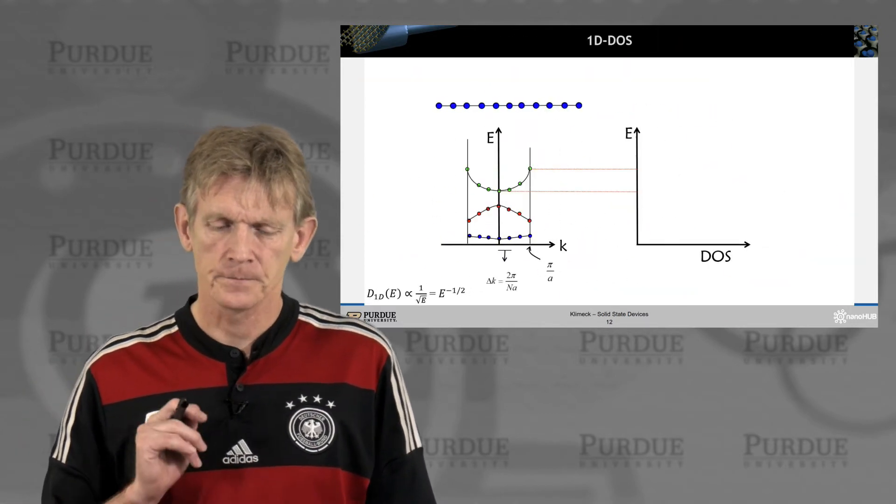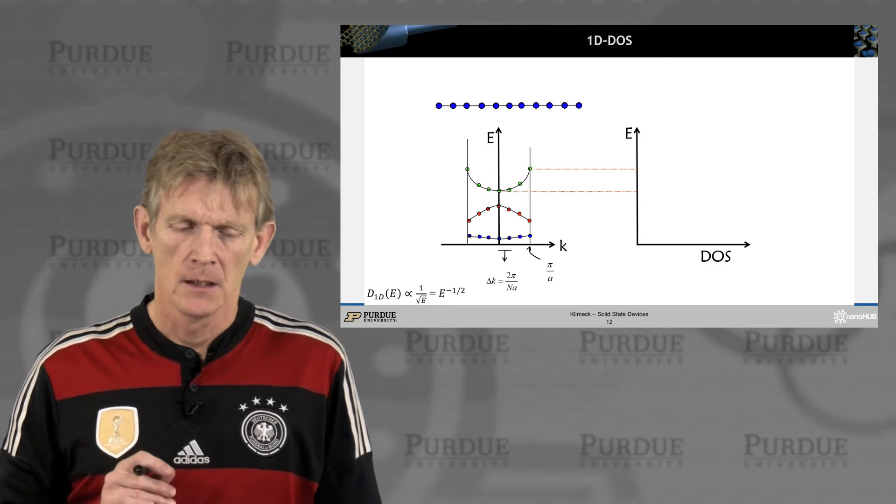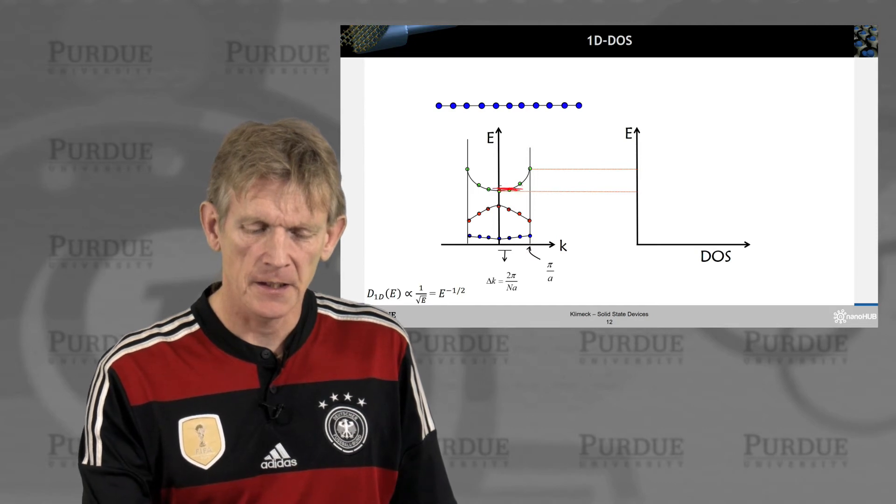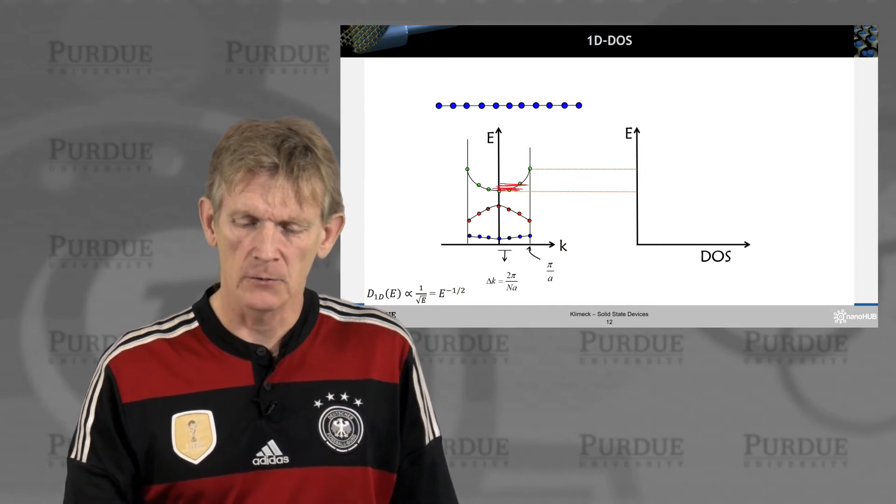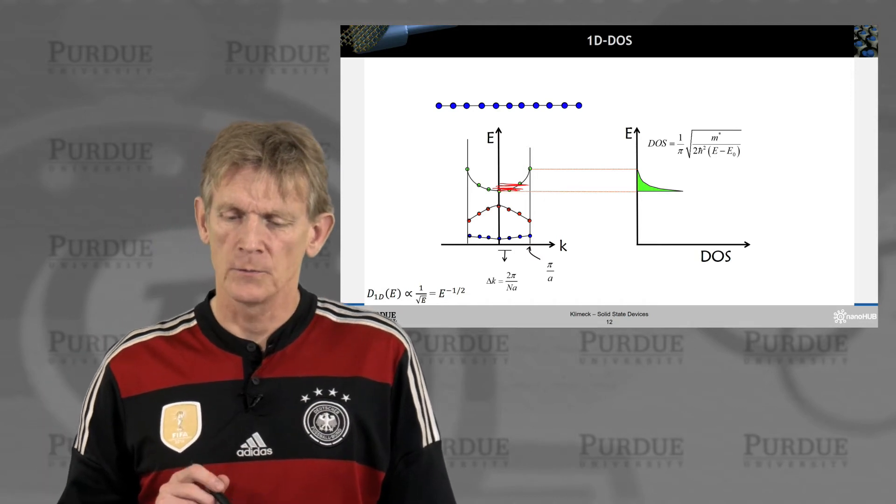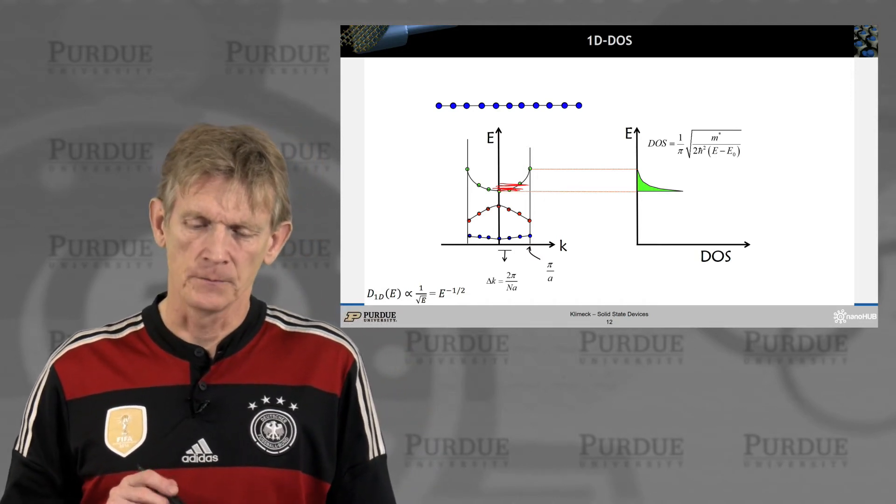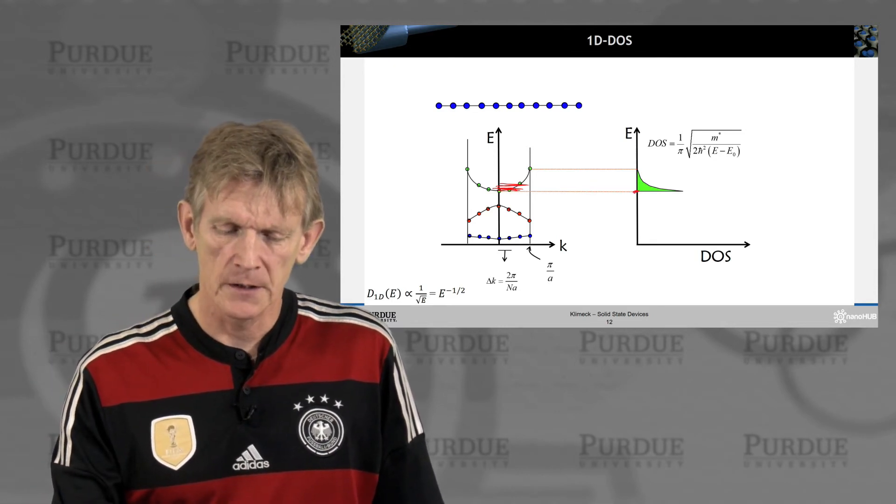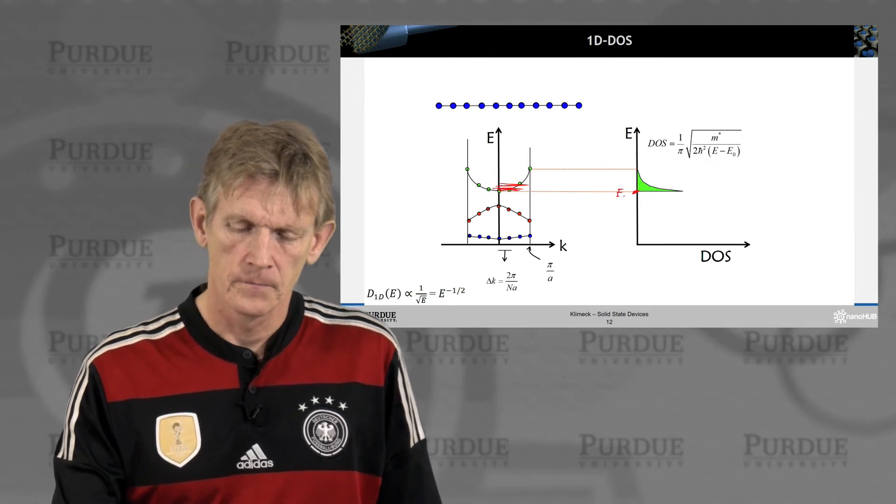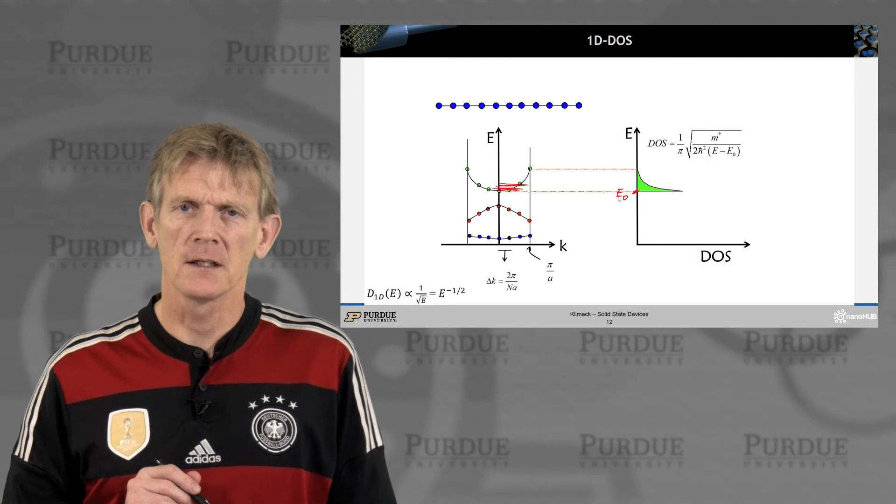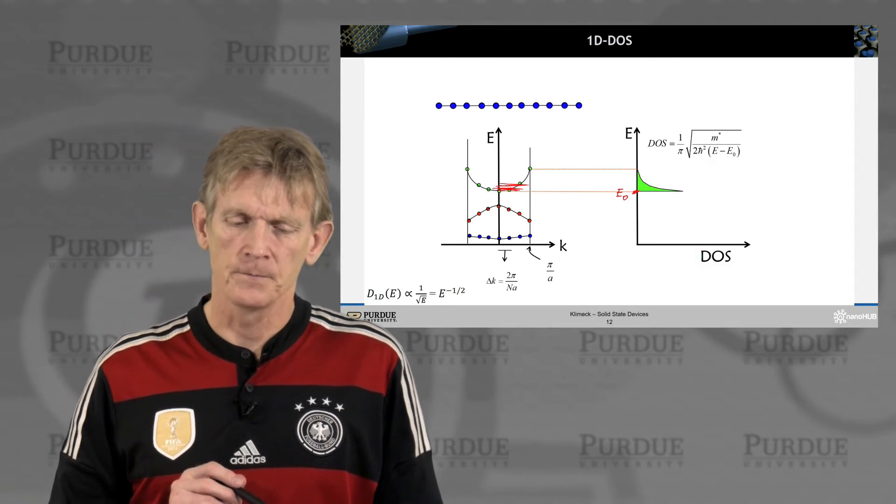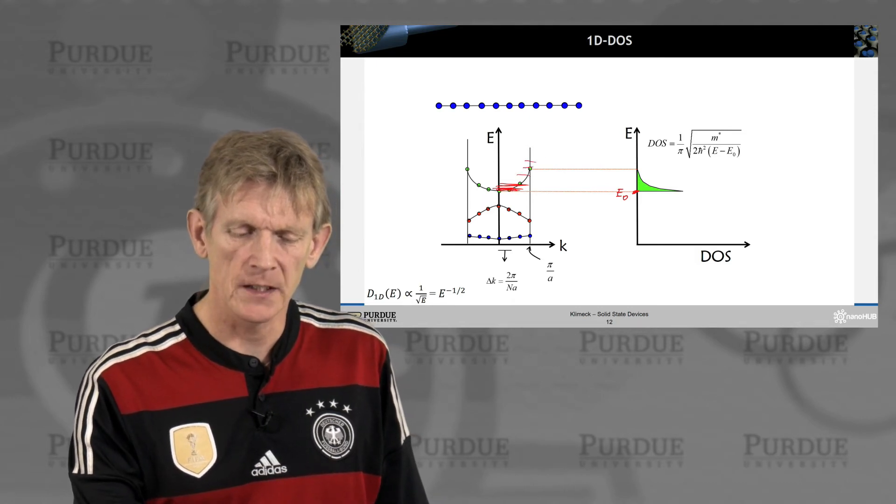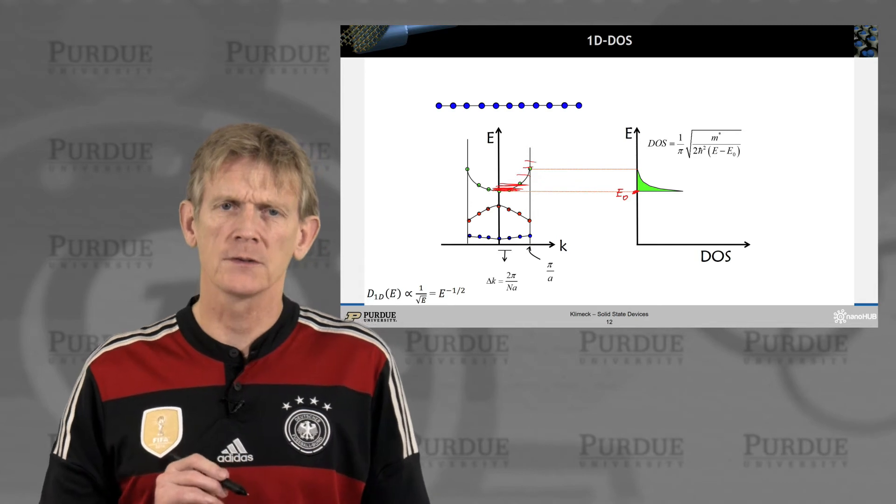E equals E naught plus h-bar squared k squared over 2m star. That's the assumption for a typical band that we're going to consider. You'll see this assumption floating throughout the whole course. At this stage, if you need to calculate the differential dk over dE, you can solve your assumption for k and resolve it. You get the square root of 2m(E minus E naught) over h-bar. This is an expression that has now occurred multiple times in the course.